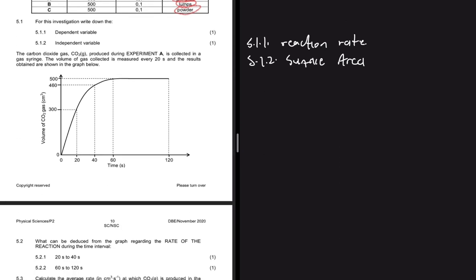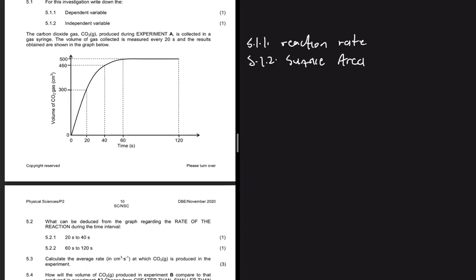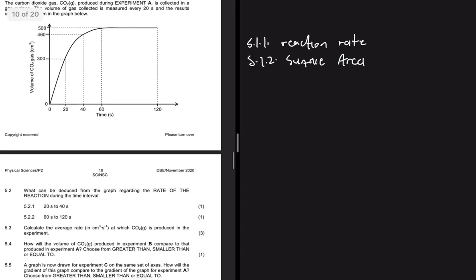The carbon dioxide gas (CO₂) produced during experiment A is collected in a gas syringe. The volume of gas collected is measured every 20 seconds and the results are shown in the diagram. Question 5.2.1 asks what can be deduced from the graph regarding the rate of the reaction during the time interval.